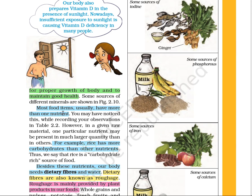Most food items contain more than one nutrient. It is possible that one nutrient is present in high content while another is present in small quantity. For example, milk contains fat, carbohydrate, protein, vitamins, and minerals — yet it is only one food item. Similarly, rice may contain minerals and vitamins, but it contains carbohydrates in very high quantity. Thus, we can say rice is a carbohydrate-rich source of food.